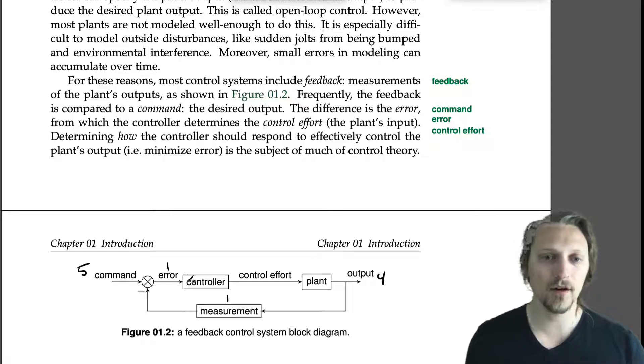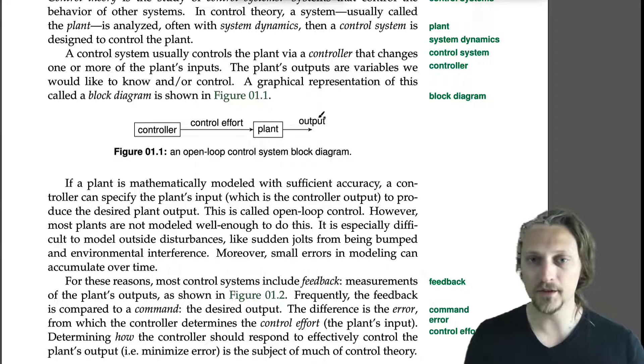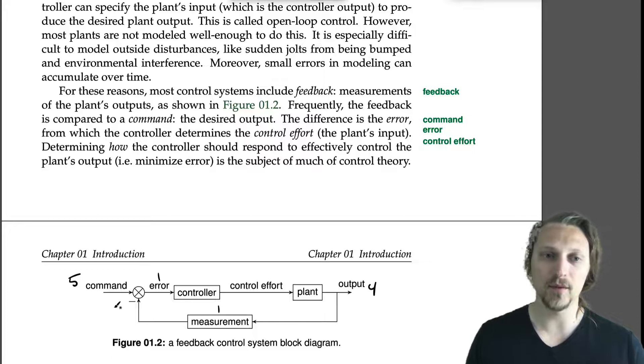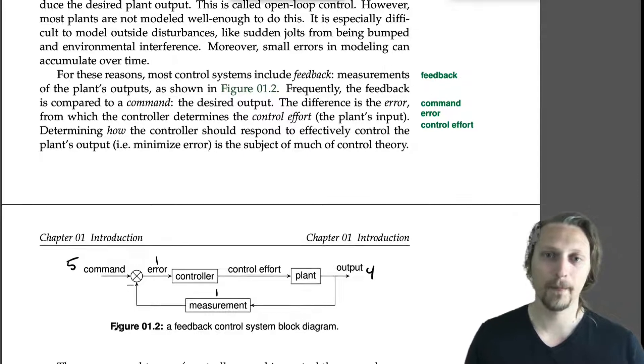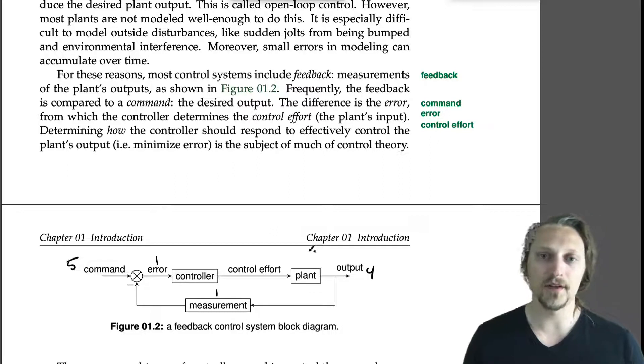We take this error value and we give it to the controller. Now the controller operates not just in the dark. Up here the controller was operating in the dark. It didn't know what was actually coming out. Now it has an idea of what's coming out and it compares it to what we want that to be. The controller then operates on this error and it gives us a control effort for the plant, just as before in open loop control. But now we can adjust what the controller does based on what the output is actually doing right now.